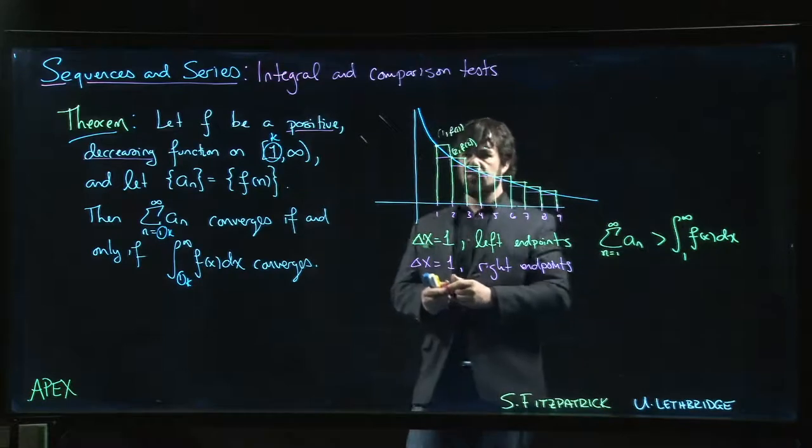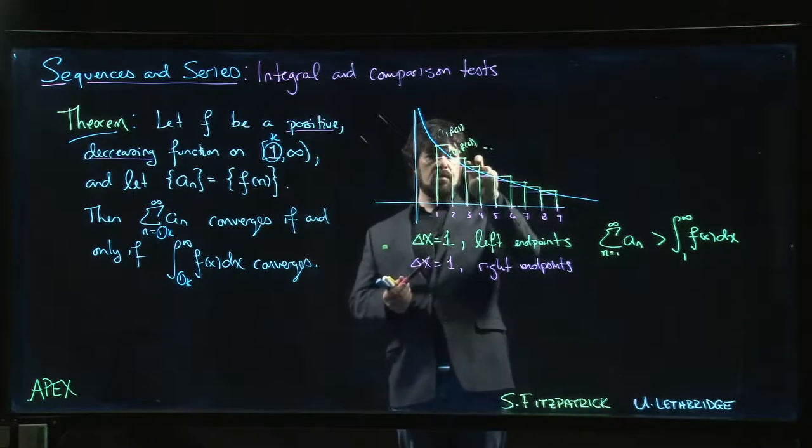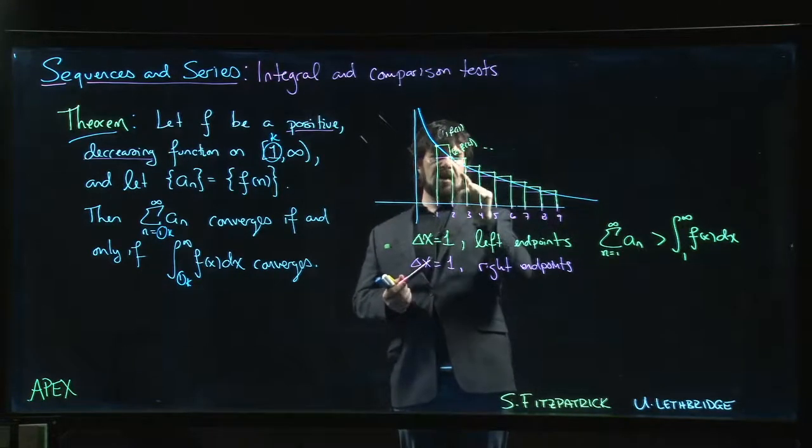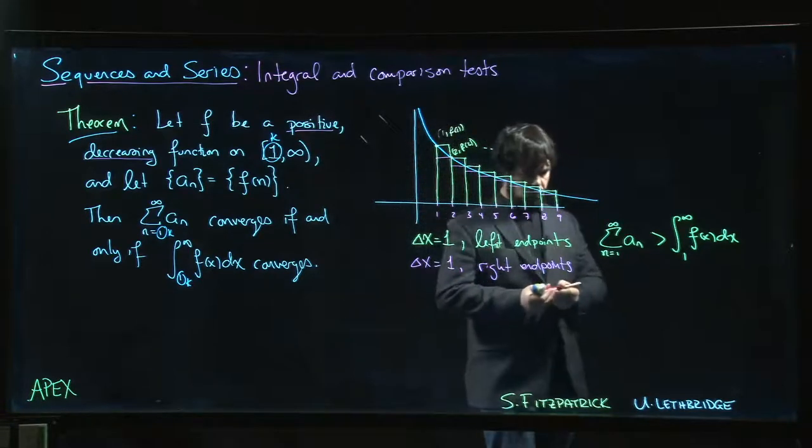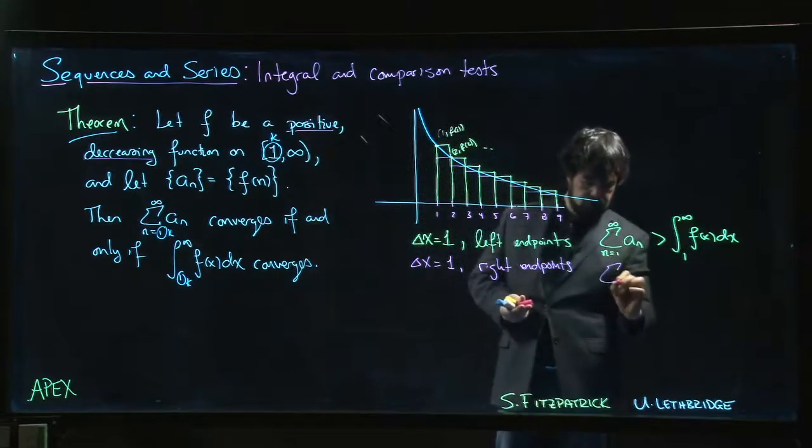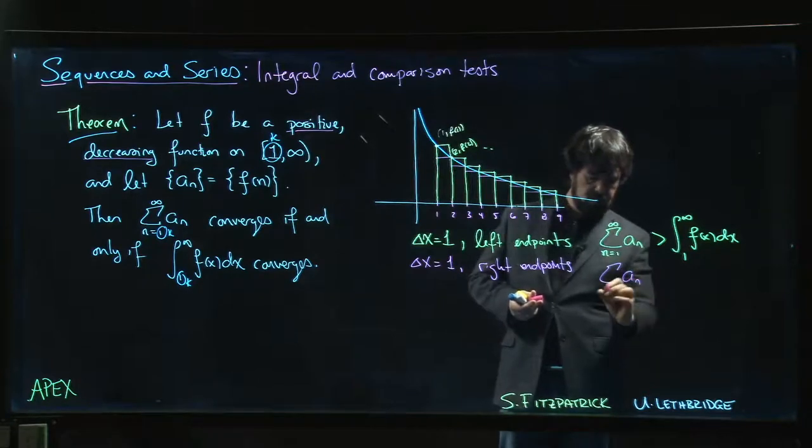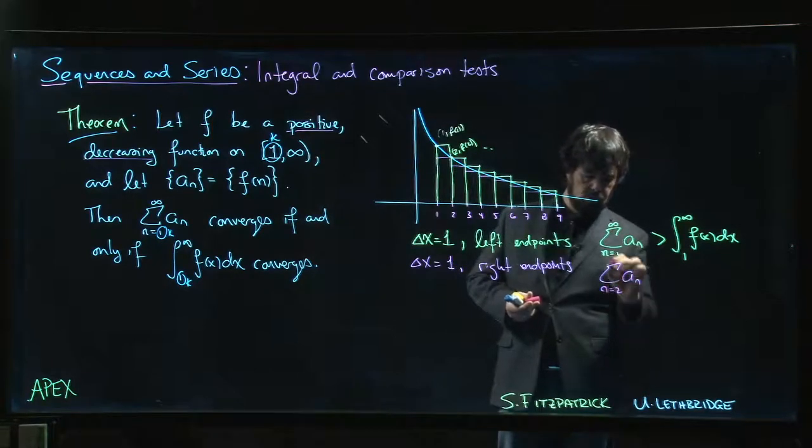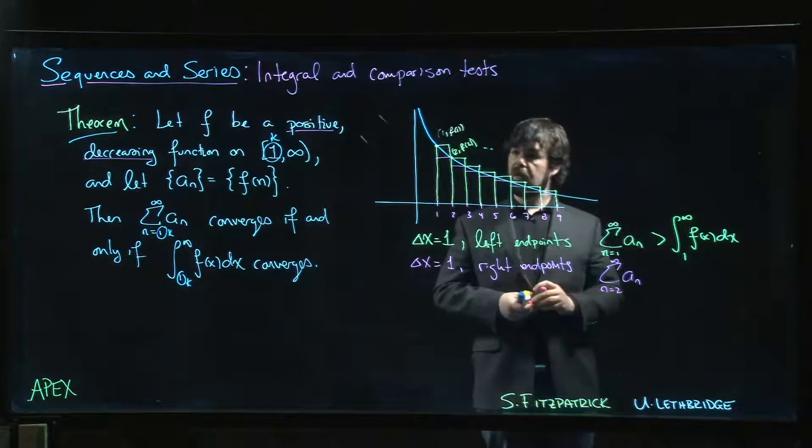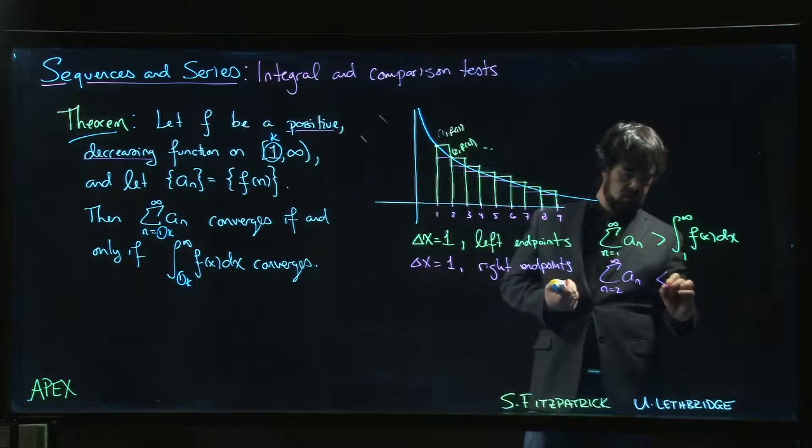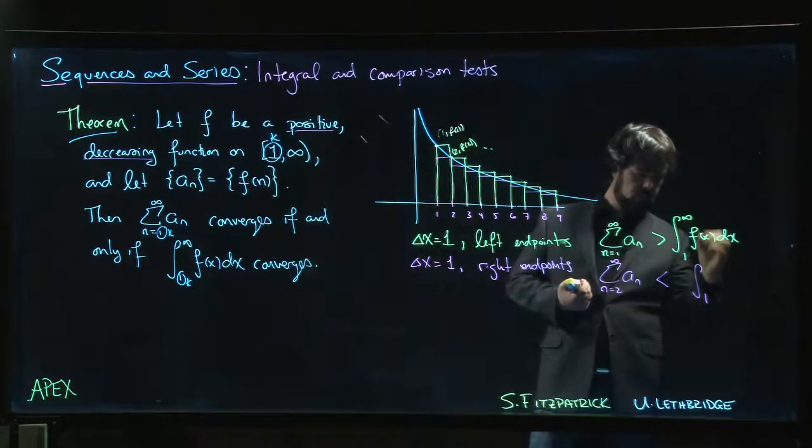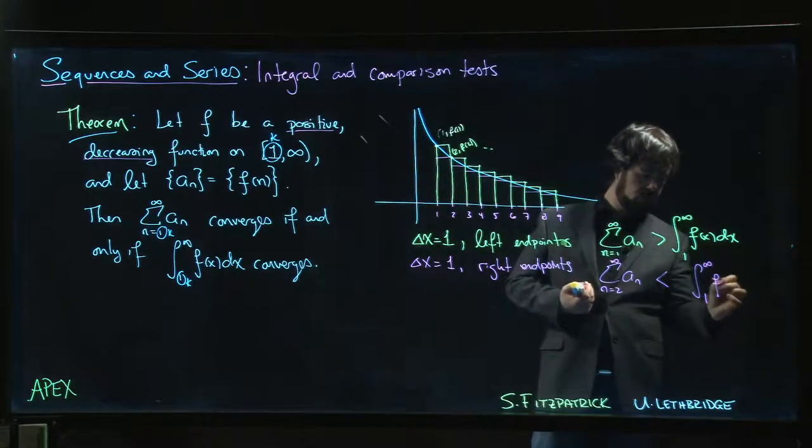And so if we use right endpoints, well then again this would be kind of f of two. We're using f of three for the second rectangle, f of four for the third, and so on. So we actually get, we still get the sum of a_n, but actually n starts at two. And that amount is going to be less than the integral.